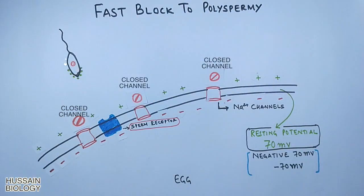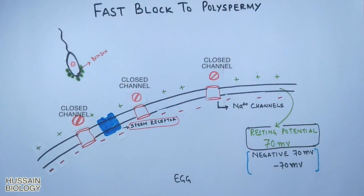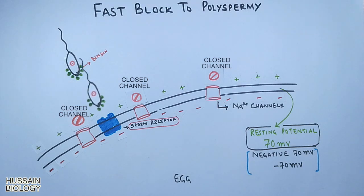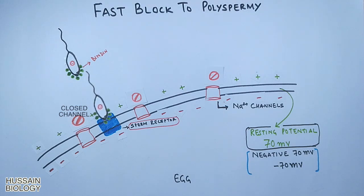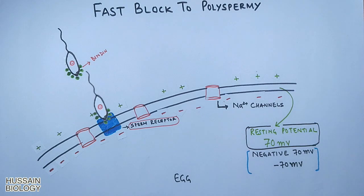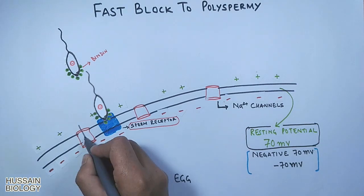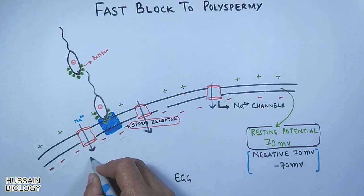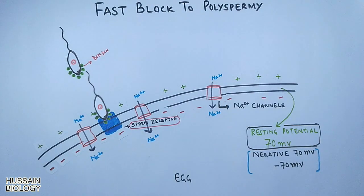When the sperm with specific binding proteins comes in and binds to the receptor on the egg cell membrane, as shown in the diagram, it causes the opening of sodium channels. The opening of sodium channels causes an influx of sodium ions into the egg, meaning positive charge is getting inside the egg.